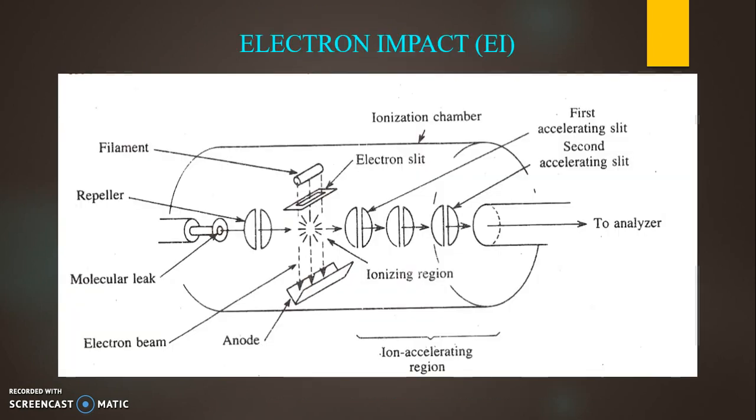So looking towards electron impact ionization source, the diagram is itself explanatory and it is very important to understand the diagram first. As you can see that this is the repeller, this is the molecular leak from where the sample will be coming.